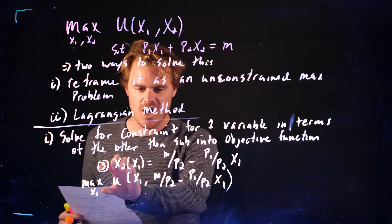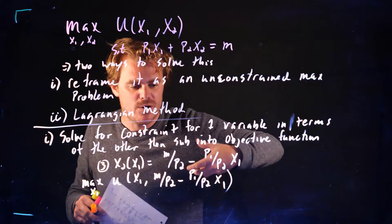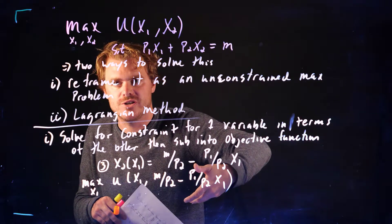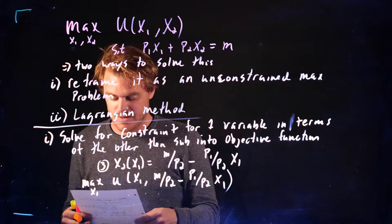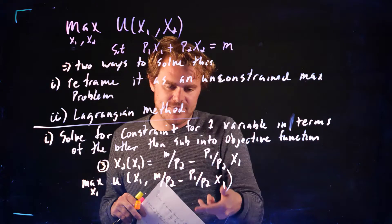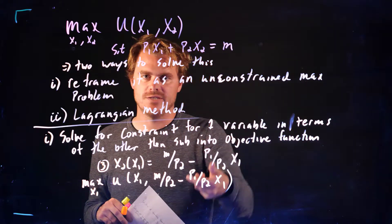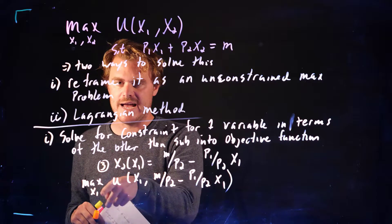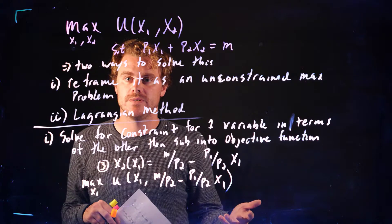Now there's no constraint — it's like we took the constraint and put it into our objective function, so now it's an unconstrained problem. We hopefully have an idea of how to solve this: we want to take the derivative of this with respect to x1 and set it equal to zero, and we can solve.